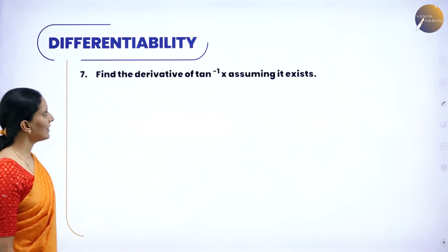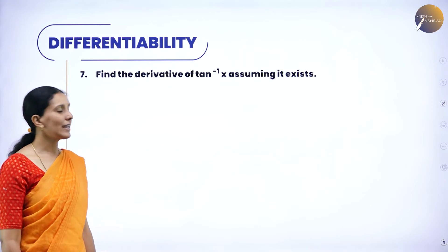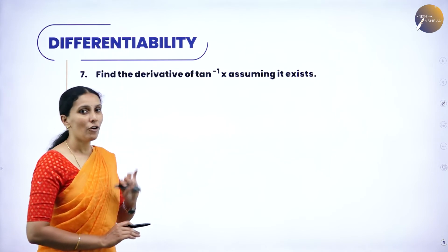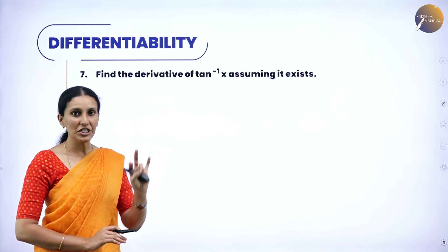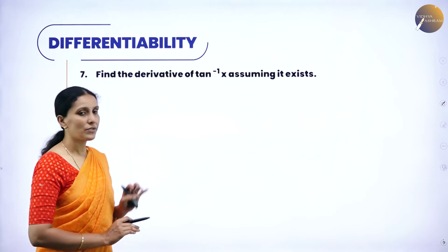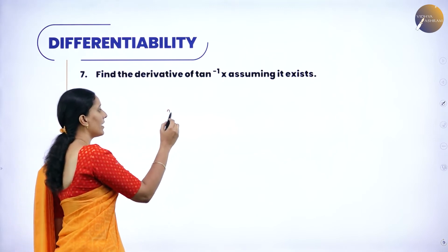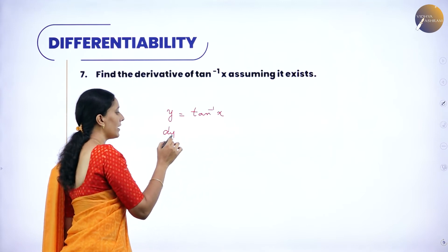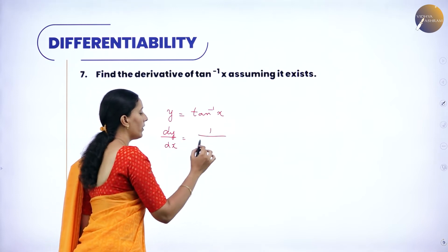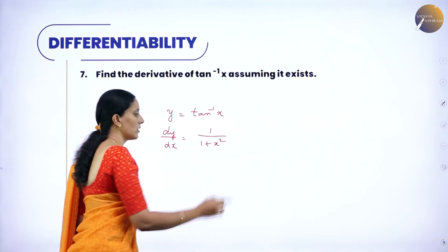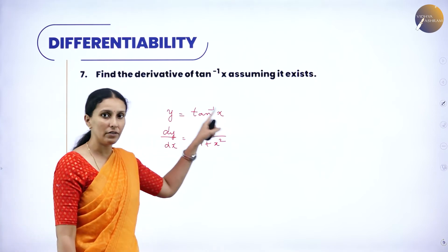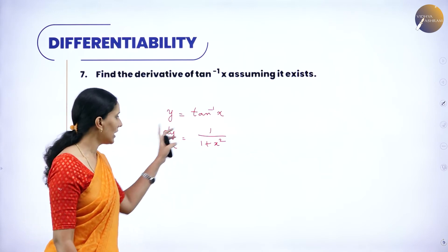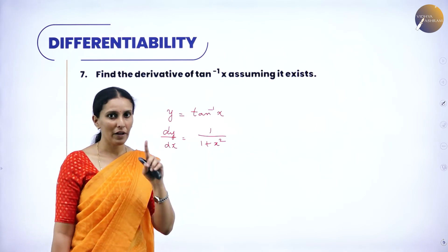Find the derivative of tan⁻¹x, assuming it exists. There is no need to prove the derivative of any inverse trigonometric function — just learn the standard answers. If y = tan⁻¹x, then dy/dx = 1/(1 + x²). This is the standard derivative of the tan inverse function. Similarly, they can ask for sin⁻¹x or sec⁻¹x — just learn the derivatives and write dy/dx directly.